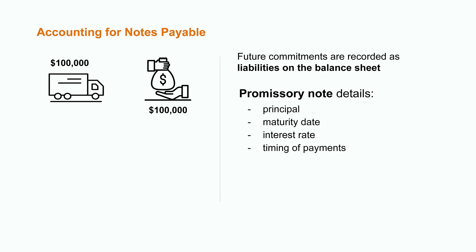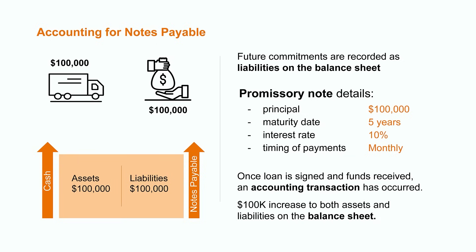In our example, let's assume the bank requires the company to pay back the $100,000 loan over the next five years. The bank includes a 10% annual interest rate and requires monthly payments — these are the key details that make up the note payable. As soon as the company signs the promissory agreement and receives the loan, an accounting transaction has occurred because money has changed hands and a financial commitment has been made. As a result, the company is required to reflect this in their financial statements. On their balance sheet, we would see a $100,000 increase to cash on the asset side and a corresponding $100,000 increase to notes payable on the liabilities side.